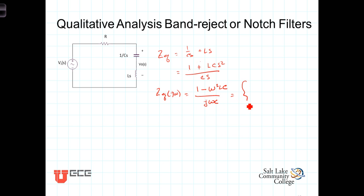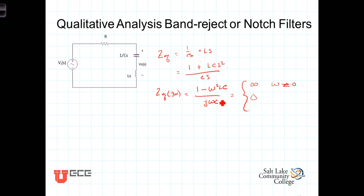It's worth looking at this impedance at three different frequencies. First, at ω = 0, we're dividing by zero, so this impedance goes to infinity as ω approaches zero. At ω = 1/√(LC), ω² equals 1/(LC), so LC × (1/LC) = 1, and 1 − 1 = 0. So this impedance has a value of zero at ω = 1/√(LC).